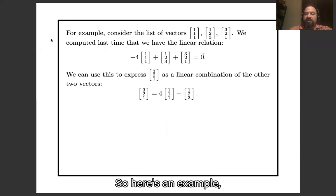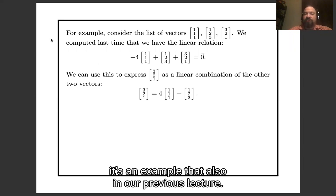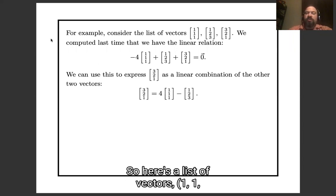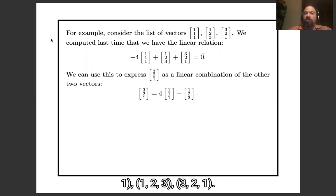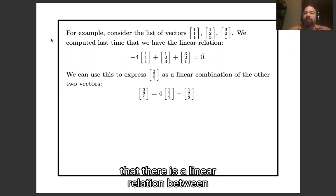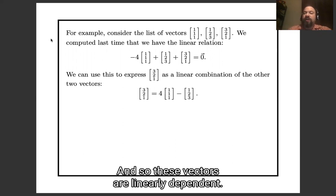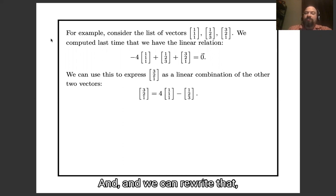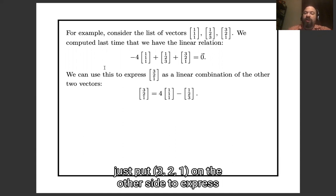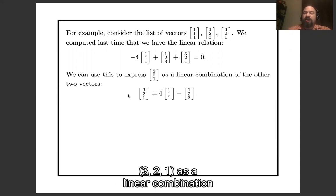Here's an example, also from our previous lecture. We have a list of vectors: (1,1,1), (1,1,2), and (3,3,2,1) — wait, let me restate: vectors (1,1,1), (1,1,2), (3,2,1). We computed last time that there is a linear relation between these vectors, so they are linearly dependent. And we can rewrite that — putting (3,2,1) on the other side — to express (3,2,1) as a linear combination of the other two vectors.